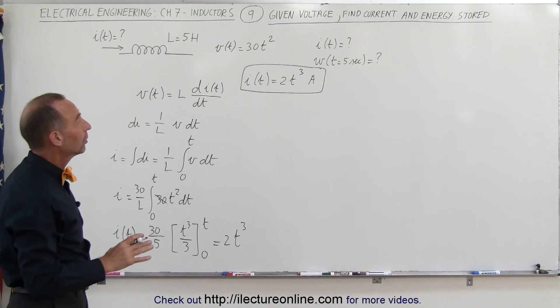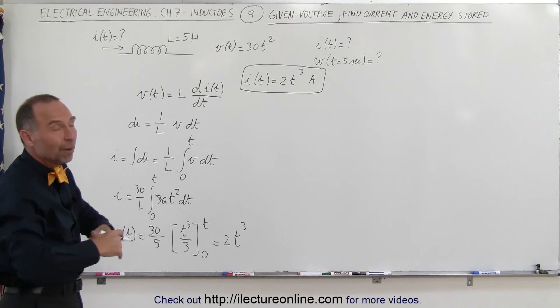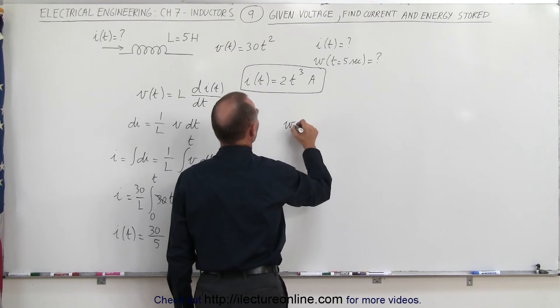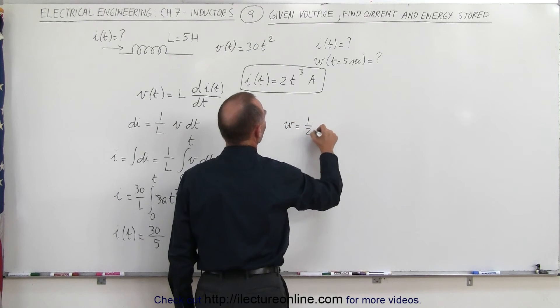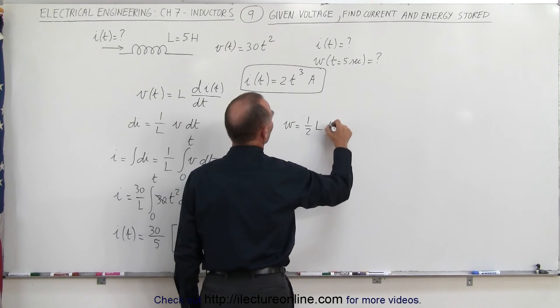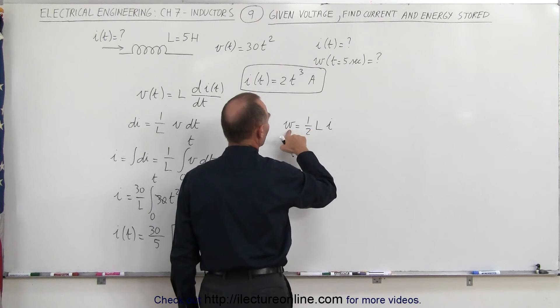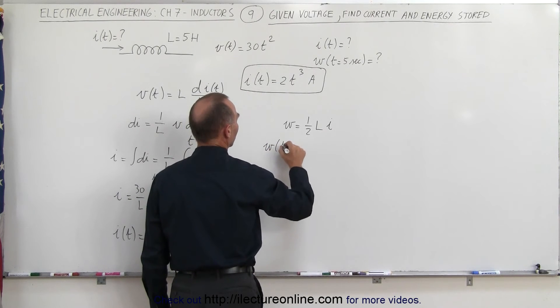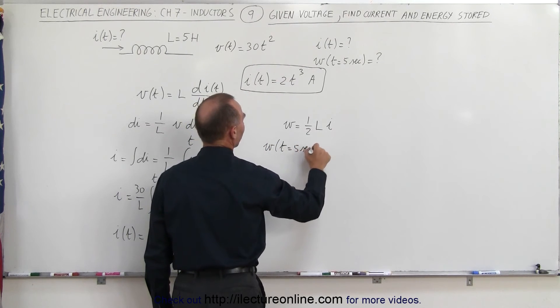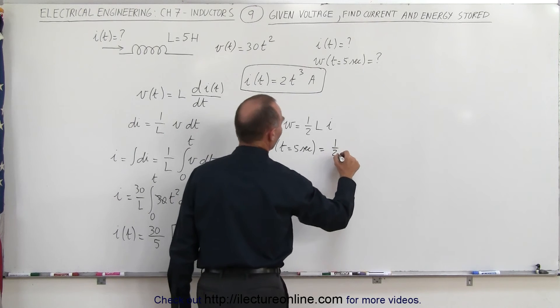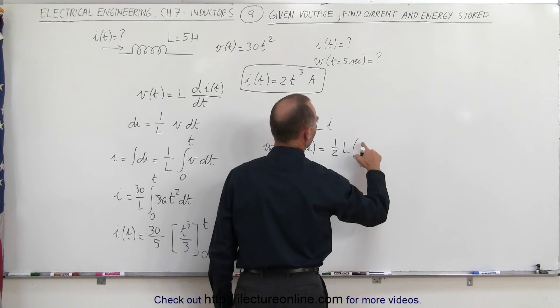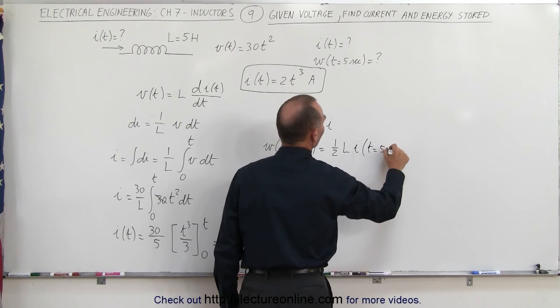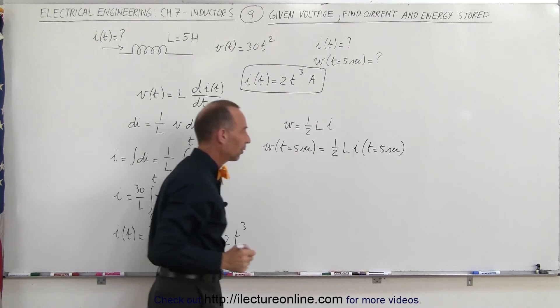Next we want to find the work done after five seconds or the amount of energy stored after five seconds. What we can say here is that the work done is equal to one half times the inductance times the current. Of course the work as a function of time is equal to the current as a function of time, or the work done when time equals five seconds is equal to one half times the inductance times I when time equals five seconds. That's what we're looking for.